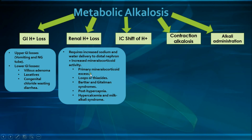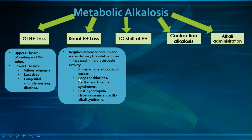Examples causing renal hydrogen ion loss include: primary mineralocorticoid excess (too much aldosterone with increased distal sodium and water delivery); loop and thiazide diuretics, which both increase aldosterone secretion and distal sodium/water delivery; and Bartter and Gitelman syndromes, both causing hypokalemia and metabolic alkalosis — Bartter resembling loop diuretics and Gitelman resembling thiazide diuretics. Note that secondary mineralocorticoid excess does not cause metabolic alkalosis due to volume depletion reducing distal delivery, unless diuretics are also used.